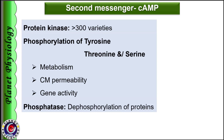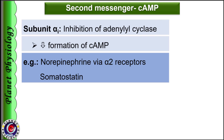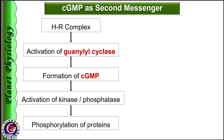Signaling cascade can be terminated by activation of specific phosphatases leading to dephosphorylation of the proteins. Many hormones act through cyclic AMP, which include GnRH, CRH (corticotropin releasing hormone), FSH, LH, ACTH, ADH and glucagon. If the hormone-receptor complex stimulates the inhibitory Alpha I unit of G protein coupled receptor, adenyl cyclase is inhibited and formation of cyclic AMP is reduced. The hormones which act by inhibiting cyclic AMP formation include norepinephrine via alpha-2 receptors as well as somatostatin.